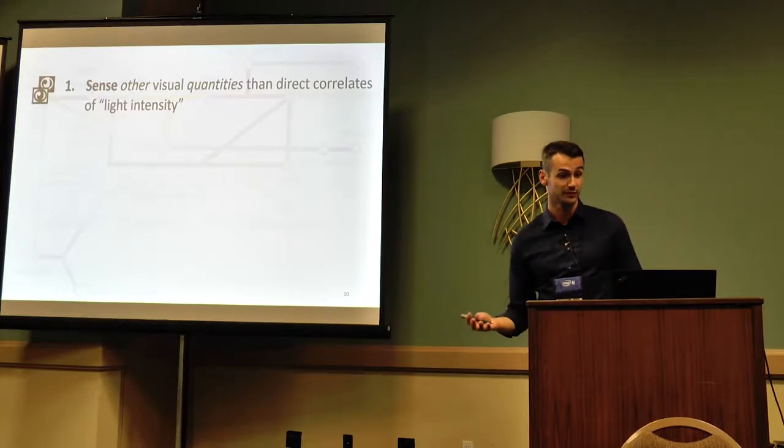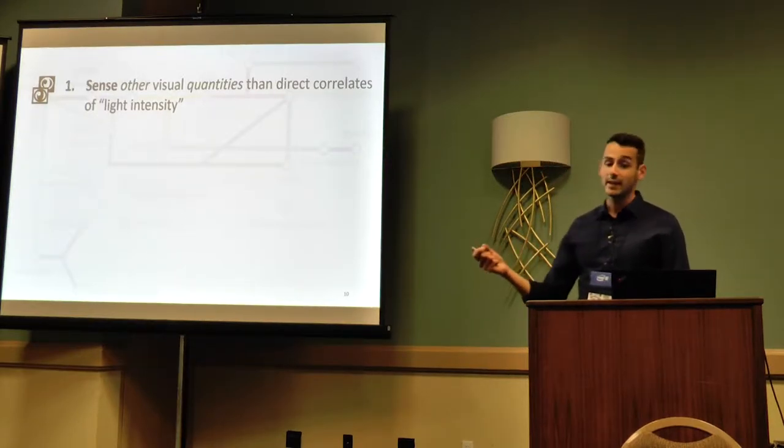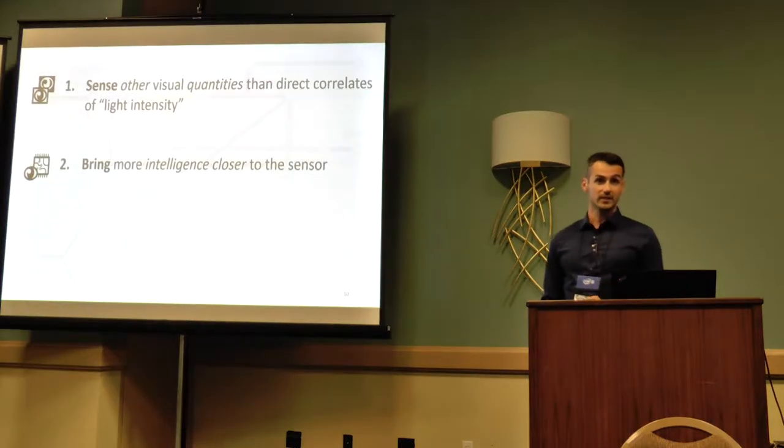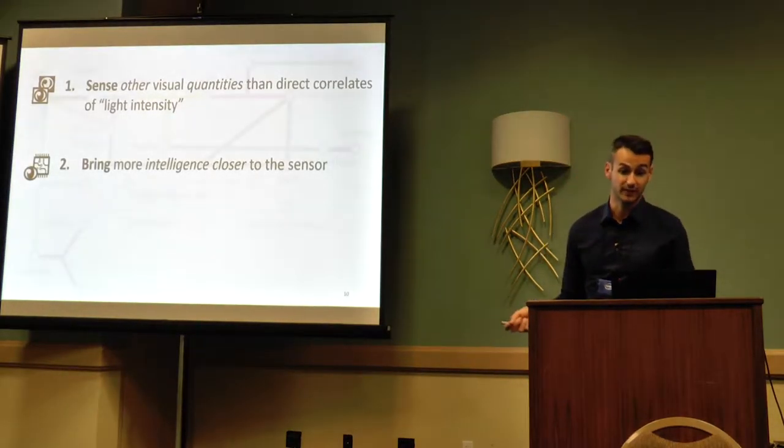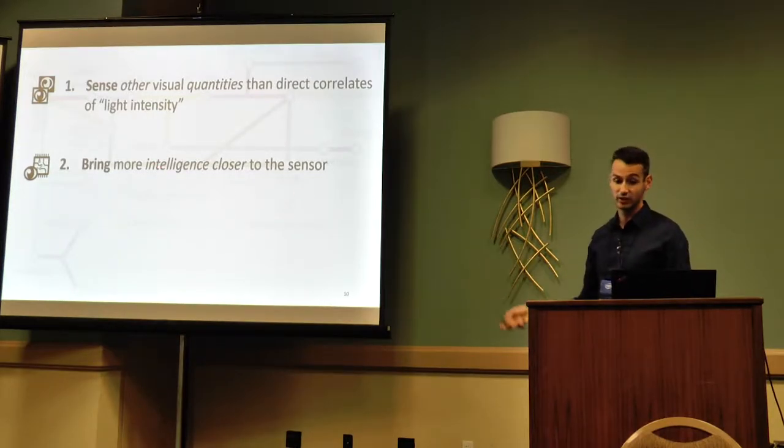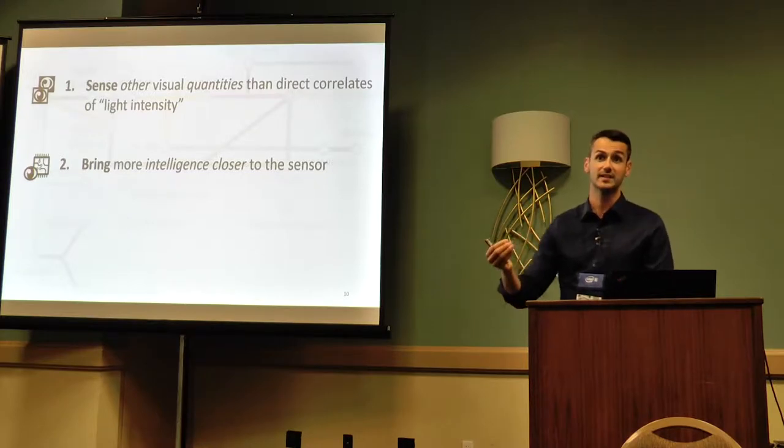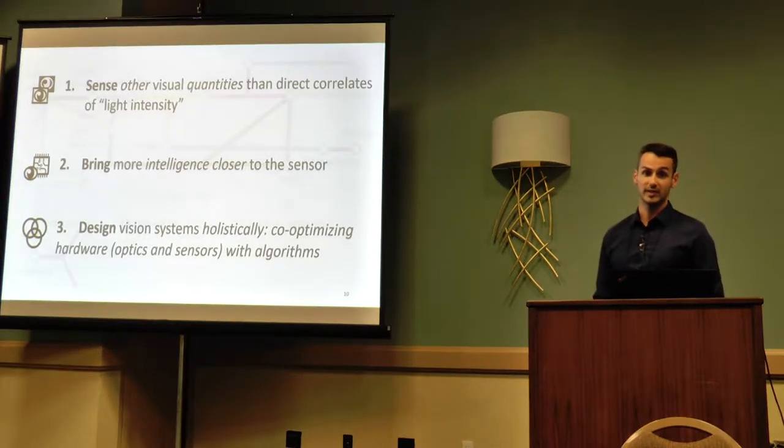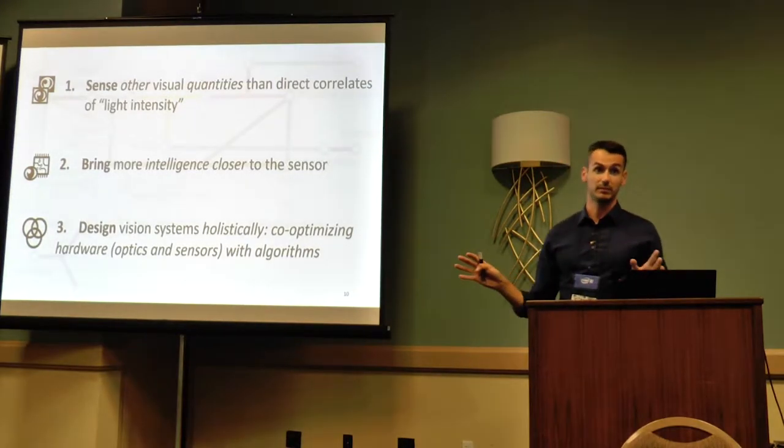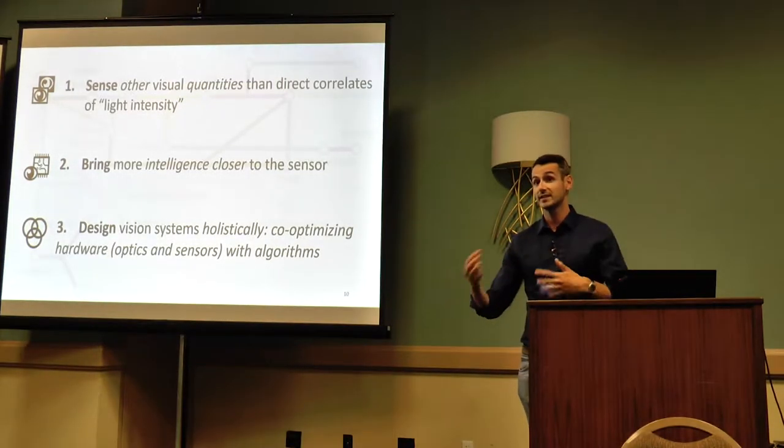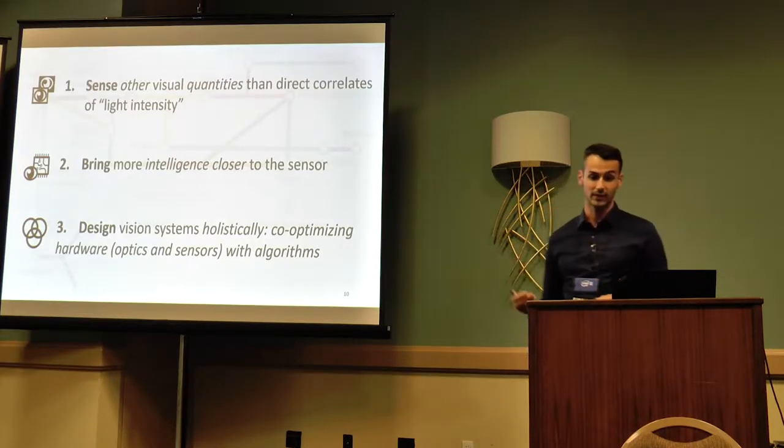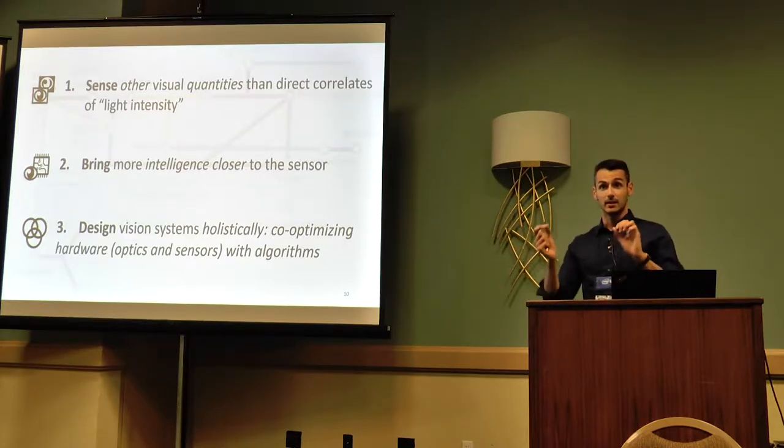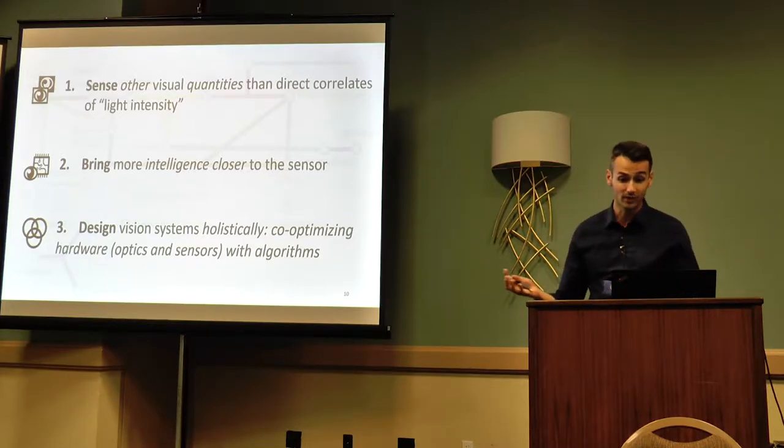Let's sense different visual quantities than light intensity. We have examples of those. These are event sensors, for instance, because sensing indirect correlates of light intensity or direct correlates of a visual quantity you're more interested in might be to your advantage. A way to do this is by building sensors or by performing inference. A way to do this is by bringing more intelligence closer to the sensor on the focal plane by, for instance, adapting our sampling strategy. Now that we have brought this intelligence in the pixel of the sensor, we might want to think of designing the vision systems completely differently because we might not even have access to an image anymore.